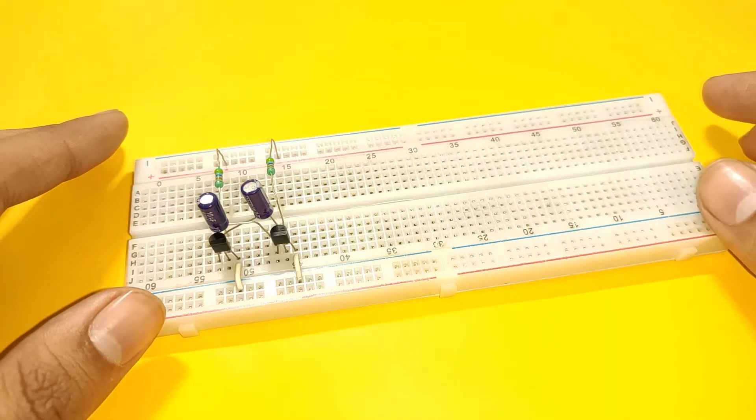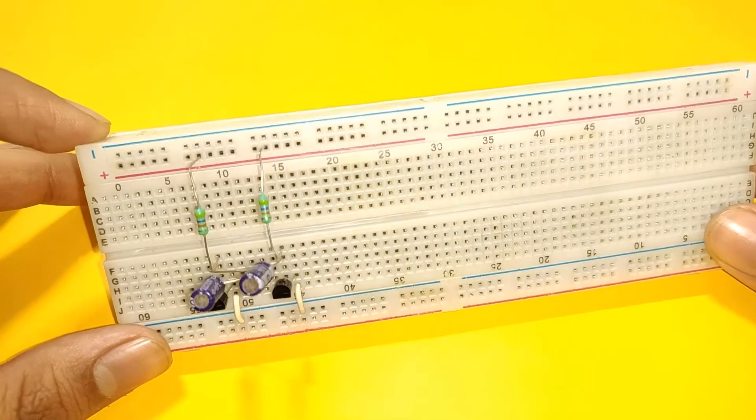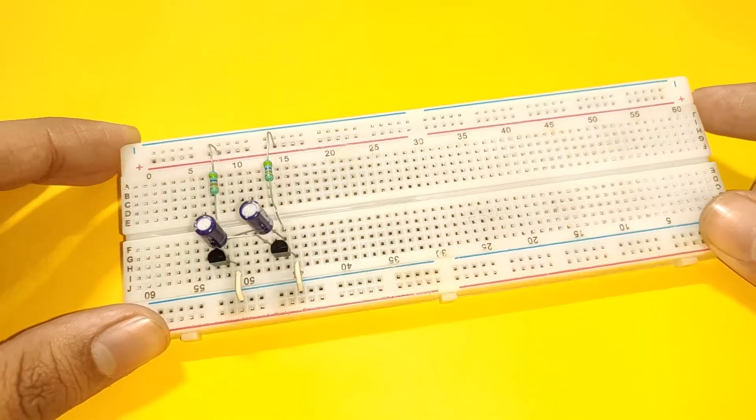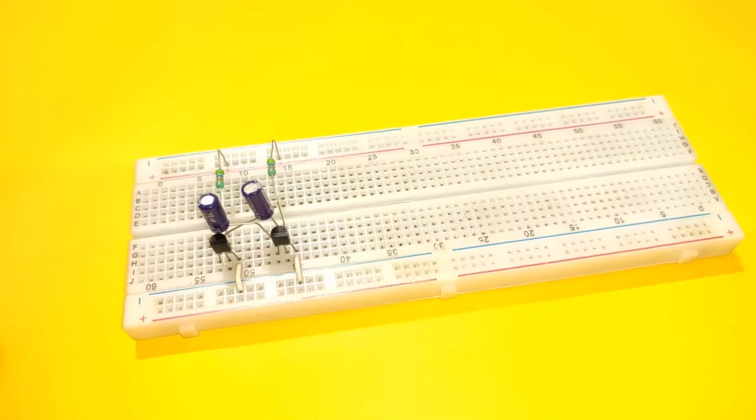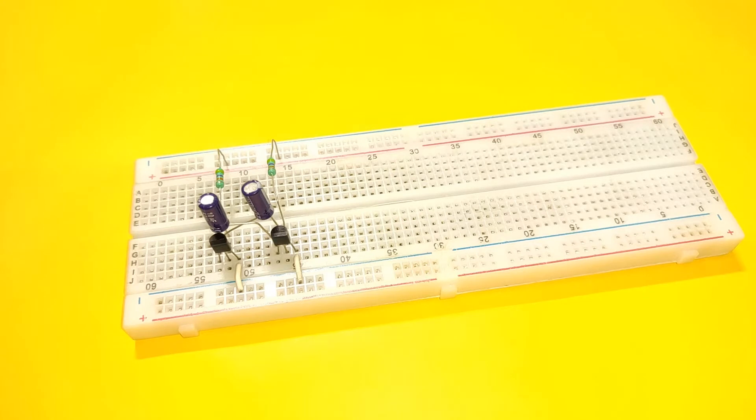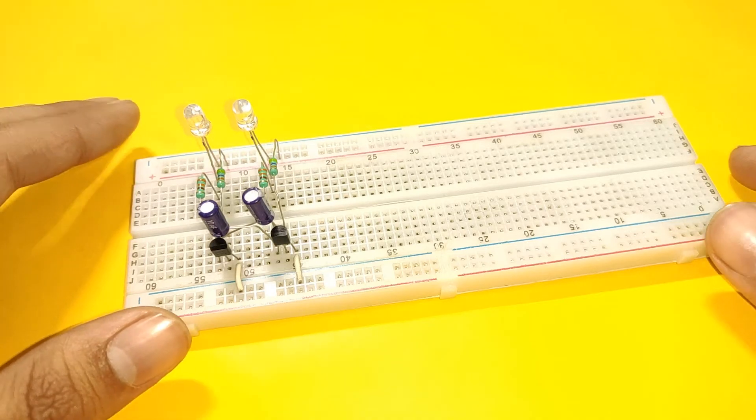Then place another 10 microfarad capacitor with its negative lead connected to base of first transistor and positive lead connected to collector of second transistor. Place two LEDs with their anodes connected to positive rail and cathodes connected to collector of each of the transistor via 330 ohm resistors.